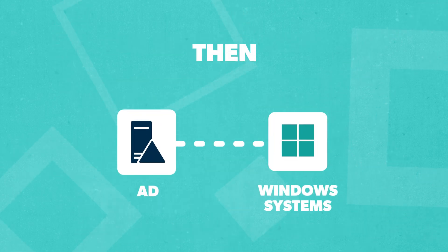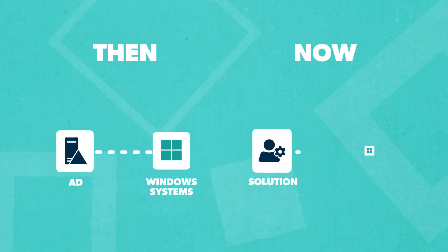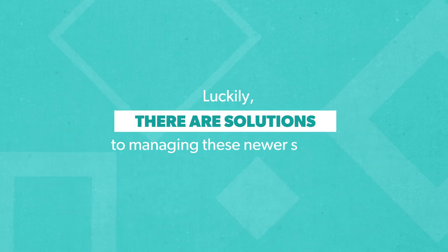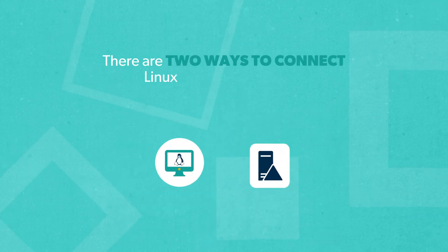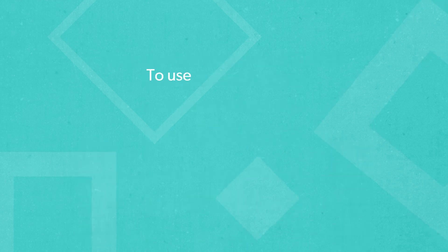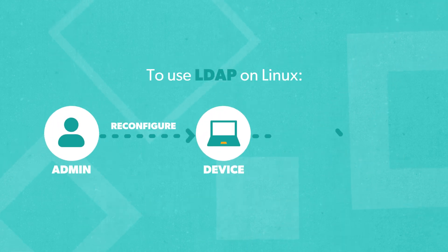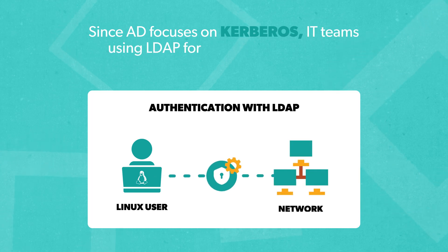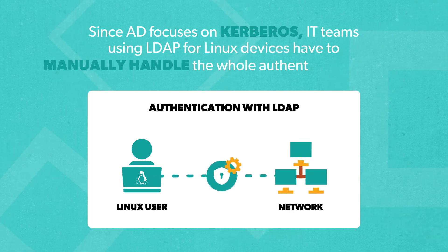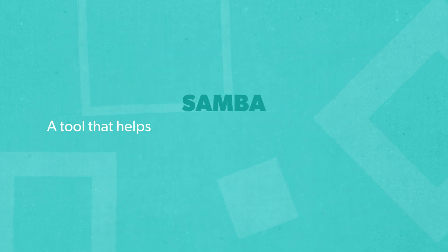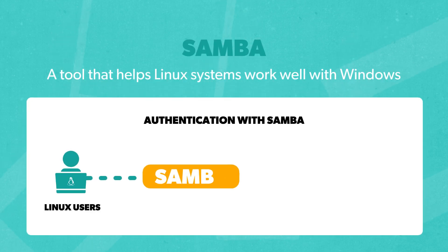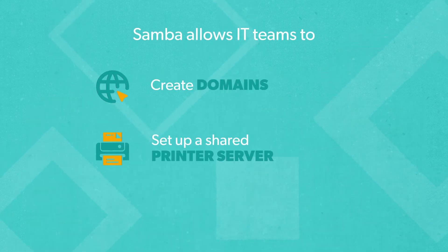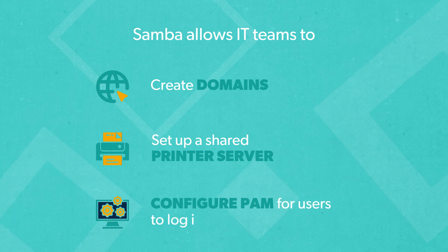While AD was designed for Windows systems and devices, in today's IT environment, admins often have to create solutions for managing different operating systems, like Linux and Mac, too. For Linux, there are two ways to connect to Active Directory: LDAP and Samba. To use LDAP on Linux, admins have to reconfigure the device to access the pluggable authentication module, also called PAM. Since AD focuses on Kerberos, IT teams using LDAP for Linux devices have to manually handle the whole authentication process. The other option is Samba, a tool that helps Linux systems work well with Windows. IT teams can use Samba as a middleman to enable AD authentication on Linux computers. This connection allows them to create domains, set up a shared printer service, and configure PAM so that users can log in and use local services.